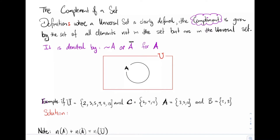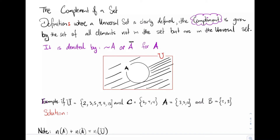Next, we look at how to denote the complement of a set. The complement is denoted by tilde A or A overline — so we have an overline above our A. These are the two ways how we denote the complement of set A. On our Venn diagram, we simply look at all the elements which are outside of set A but are still in the universal set.